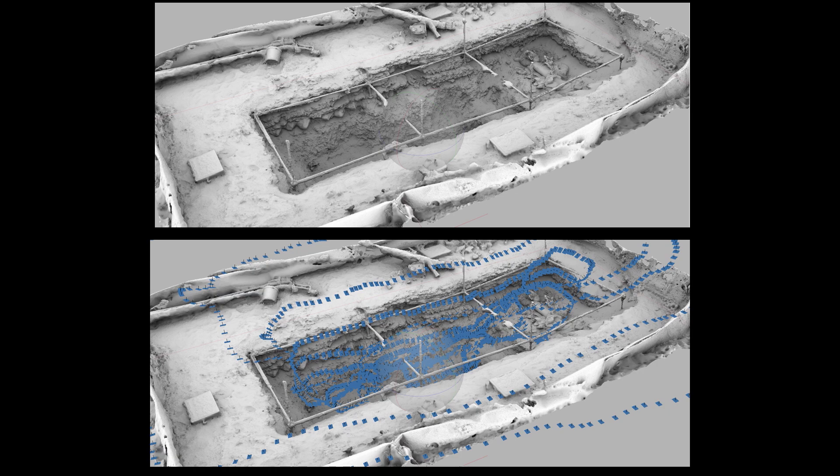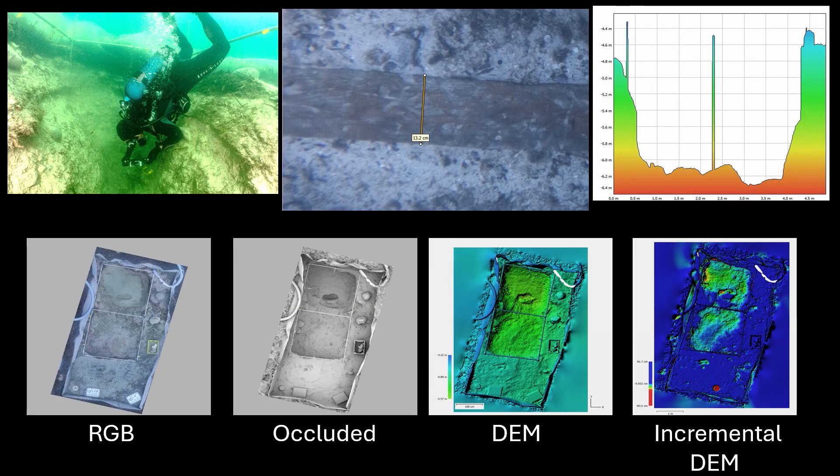The blue lines you see are the photographs which were used to make up the 3D model. The outcomes from this work allow us to do many things — we can measure objects virtually, for example a piece of timber discovered on the seabed during excavation. We can create cross-sections of the trench, and we can use daily models to compare progress and document change. We're seeing a digital elevation model showing actual depths of the site, and another one comparing one day with the previous day, showing areas of the site which have actually changed. It's a very powerful tool for technical documentation.